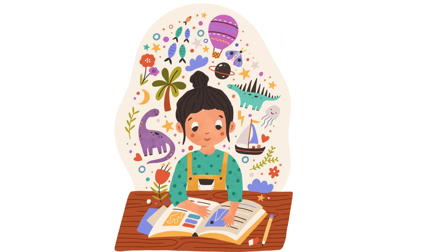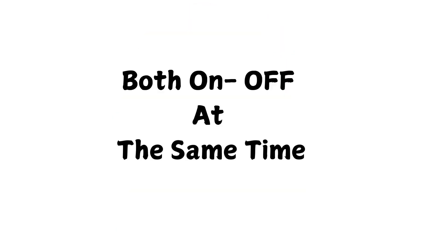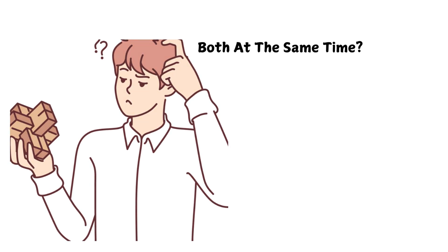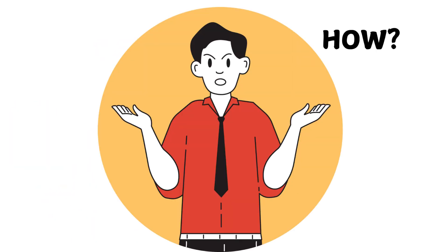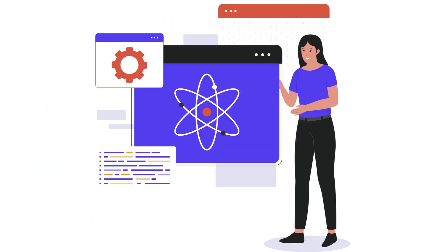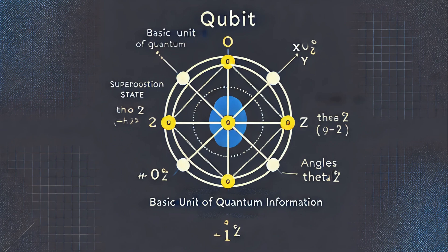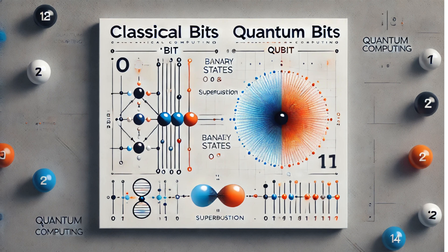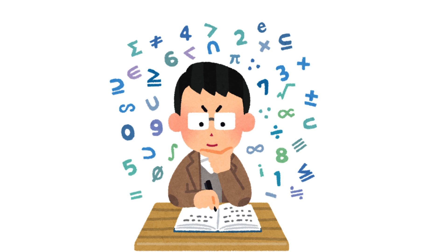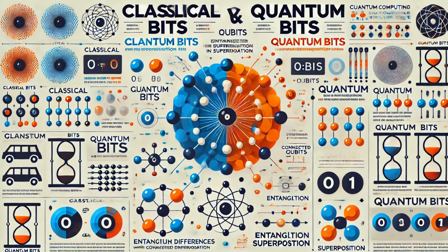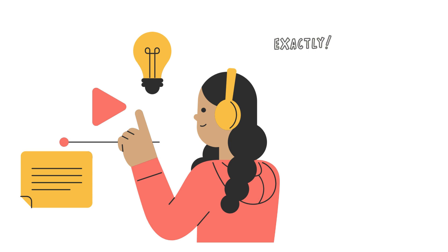But a qubit can be in a superposition of states — instead of just being on or off, it can be both on and off at the same time. It's a quantum phenomenon. It's like a dimmer switch that can be set to any level of brightness between fully on and fully off. So qubits are like super-powered bits that can hold way more information.